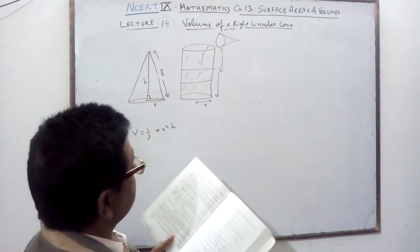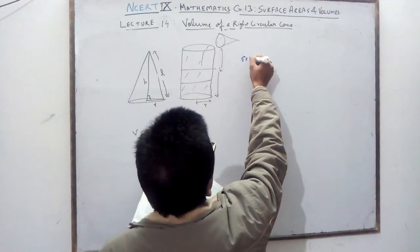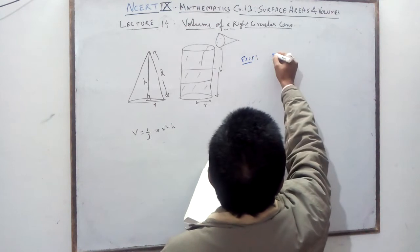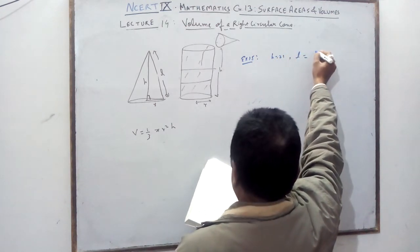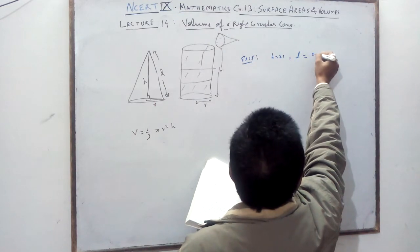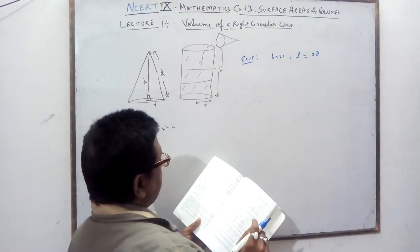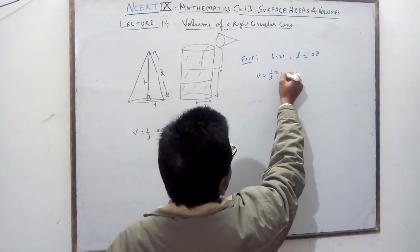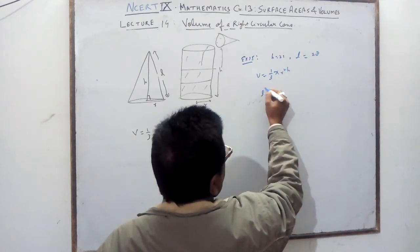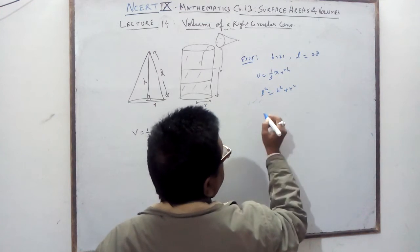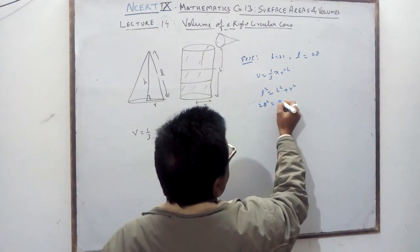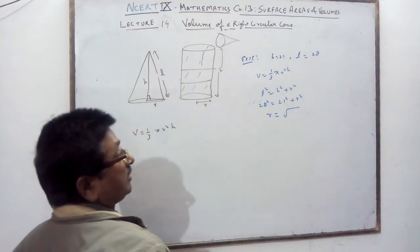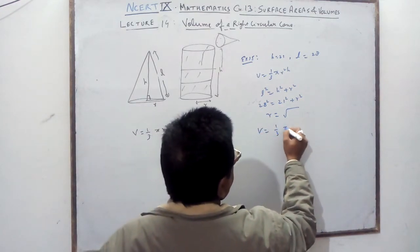Example 15 from your book: the height is given as 21 cm and the slant height is given as 28 cm. Find the volume. Since slant height is given but radius is not, first find the radius using: l² = h² + r², so 28² = 21² + r².